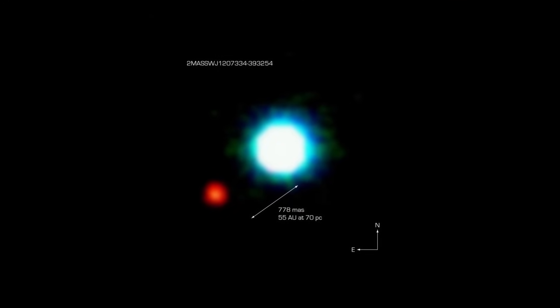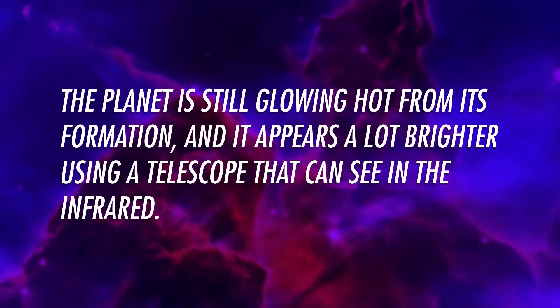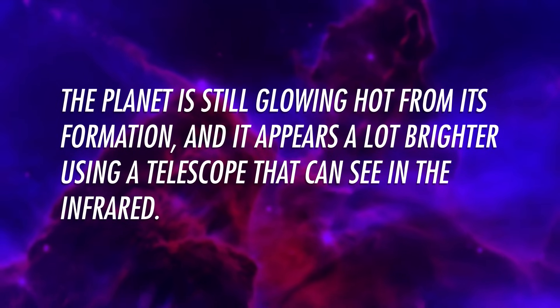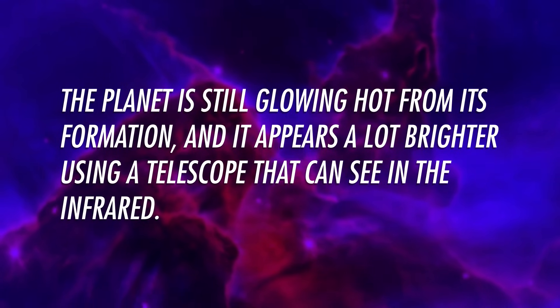a planet with five times the mass of Jupiter. It orbits a brown dwarf, a peculiar kind of low-mass star that we'll learn more about in a future episode. It's a young system, which makes it easier to see. The planet is still glowing hot from its formation, and it appears a lot brighter using a telescope that can see in the infrared. About a dozen other planets have been seen this way, too.